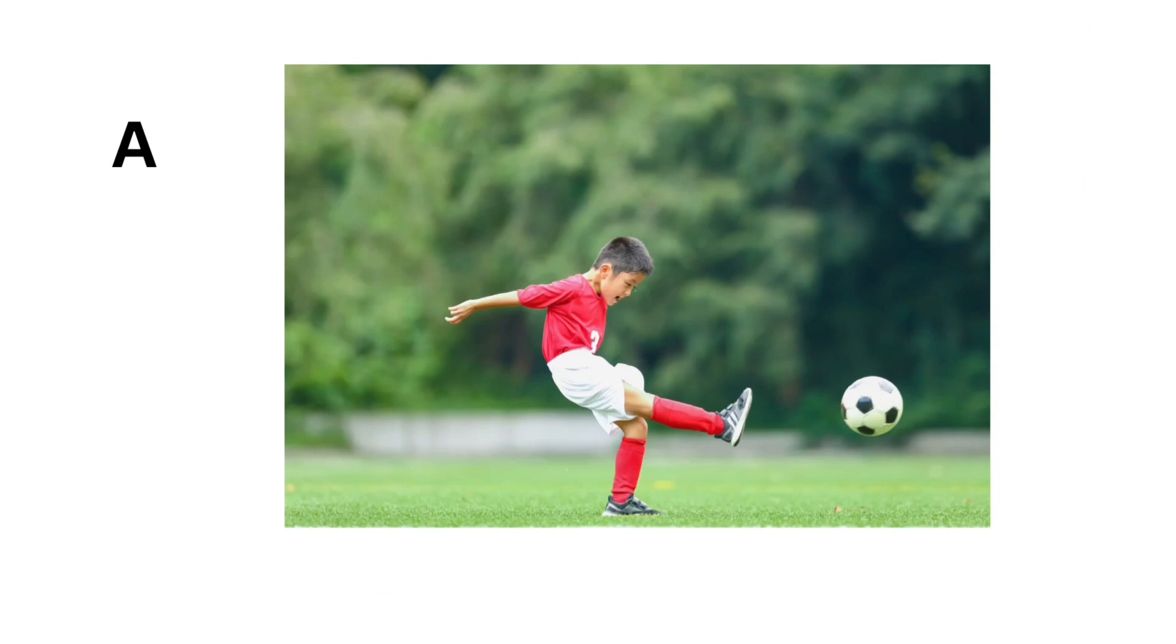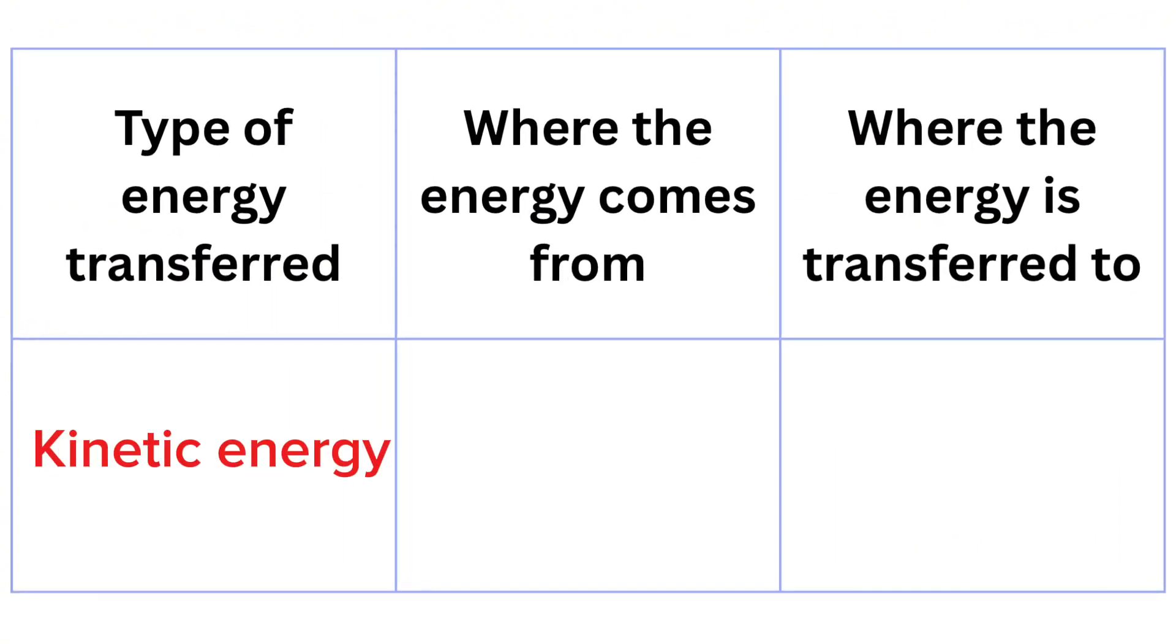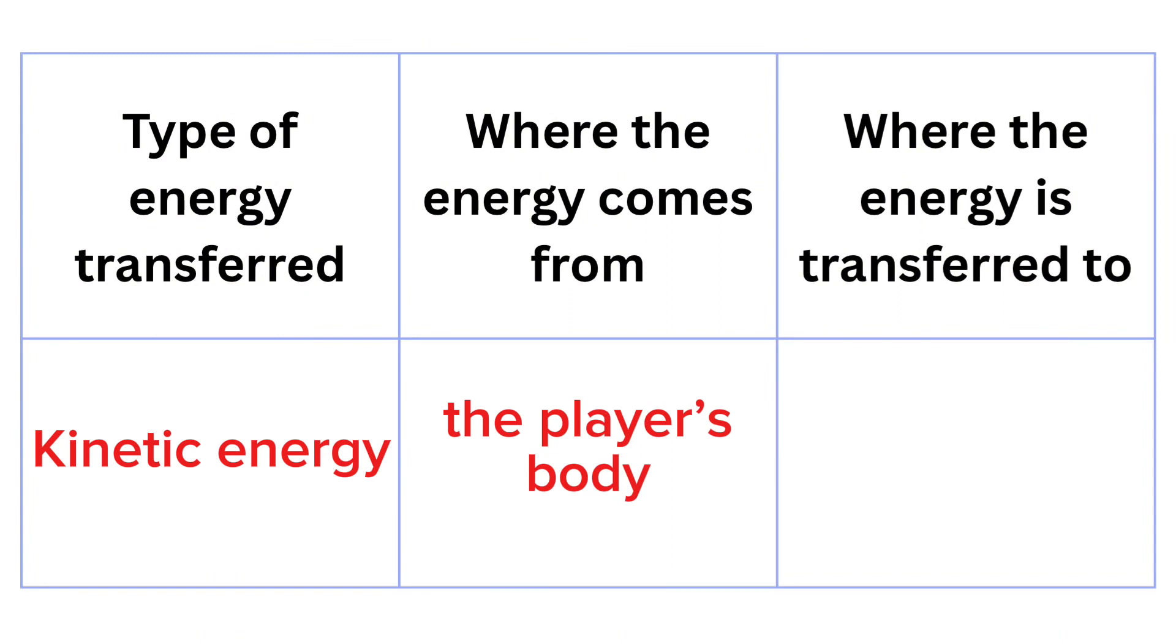Let's start with picture A. In this picture, we see a person getting ready to kick a football. To kick the ball, the player's muscles use energy from their body. That energy is then transferred to the ball as kinetic energy causing it to move. So the player's body is where the energy comes from and the football is where it is transferred to.